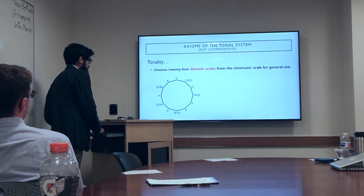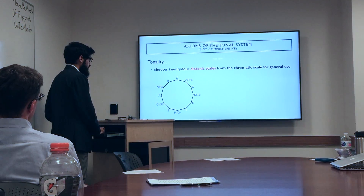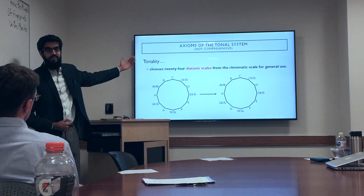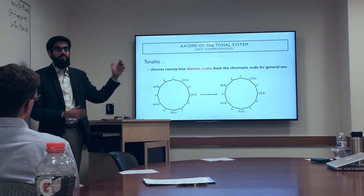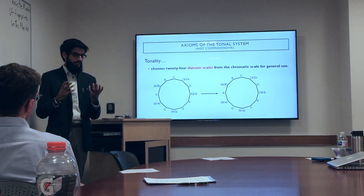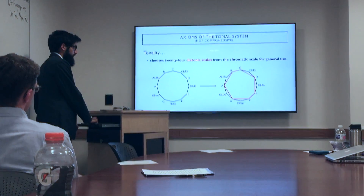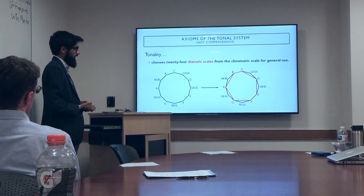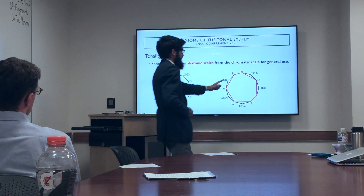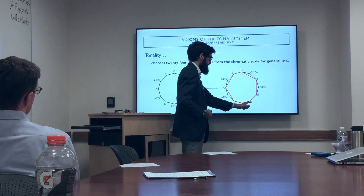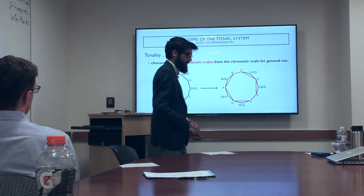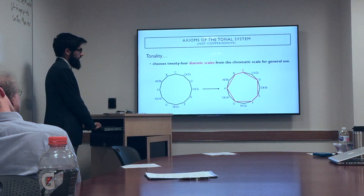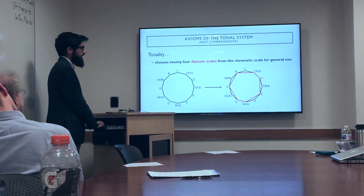Here's the chromatic scale, and let's look at what a diatonic scale looks like inside it. The 24 diatonic scales that tonality uses consist of 12 major scales and 12 minor scales. Here, for example, is a C major scale — it looks like an asymmetrical polygon inside the 12-gon, comprised specifically of whole step, whole step, half step, whole step, whole step, whole step, half step. Since we can start on any of the 12 pitches, we have 12 major scales.